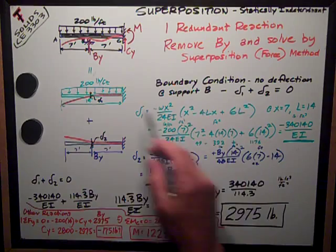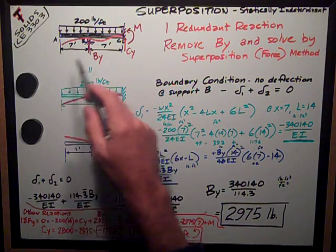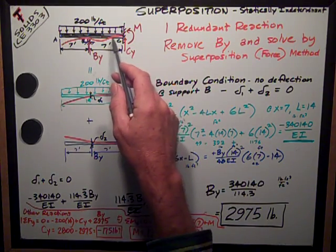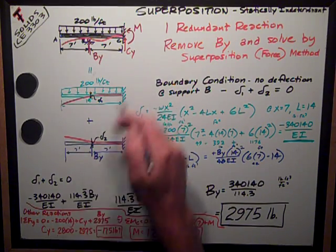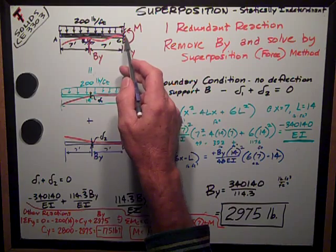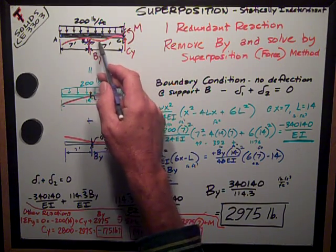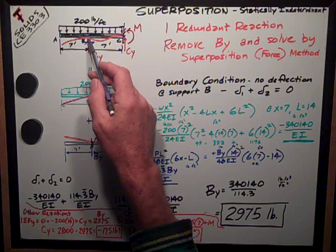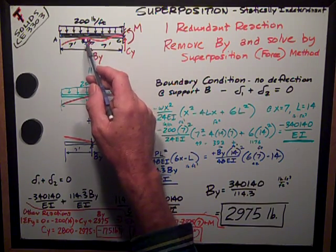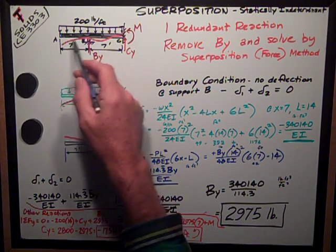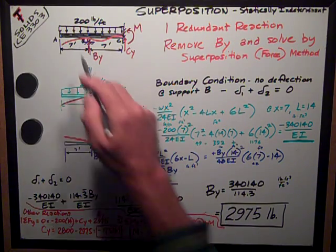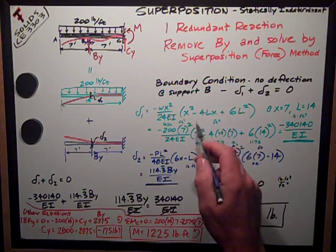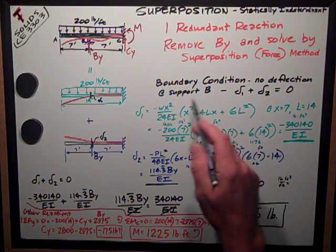So my boundary condition - a big thing on these problems is to draw the elastic curve, here it's in red, greatly exaggerated, no slope at the support, fixed support, dipping down under the load, getting back up to zero deflection at point B where the support is and then continuing to deflect downward due to the uniform load after that. So my boundary condition is no deflection at support B.